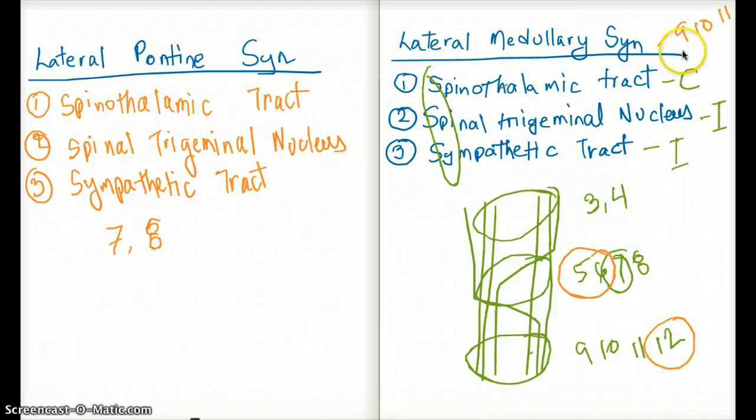So they might not give you symptoms for all the cranial nerves, maybe one of them or two of them, but it's still a good indication that it's a lateral medulla. And the same thing for lateral pons. If they give us a facial nerve deficit, we know it's lateral pontine syndrome. Or if they give us a deficit of cranial nerve 8, then also we know that's going to be lateral pontine syndrome.